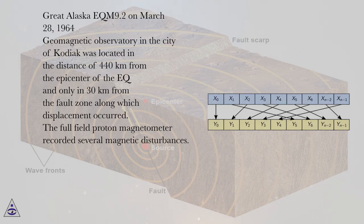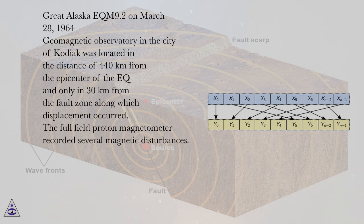Great Alaska EQ M9.2 on March 28, 1964. Geomagnetic observatory in the city of Kodiak was located in the distance of 440 kilometers from the epicenter of the EQ and only in 30 kilometers from the fault zone along which displacement occurred.